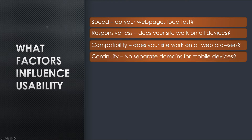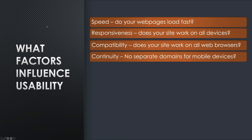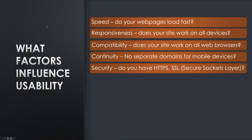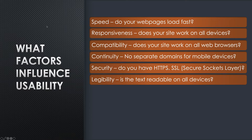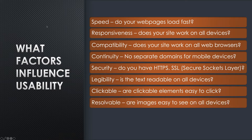Continuity: no separate domains for mobile devices. If you've got an m-dot version of your site and you're hiding information from mobile users that you show on desktop, Google crawls as a smartphone, picks the mobile domain version which won't have that detail — so it will never show up in the index or the search results. Keep everything on one domain. Security: do you have HTTPS, SSL, secure sockets layer? It is a ranking signal for search — you definitely need it. Legibility: is the text readable on all devices? Are clickable elements easy to click and not too close together? Are images easy to see on all devices? Is your site usable for those with disabilities?